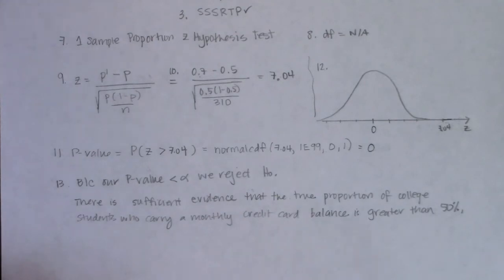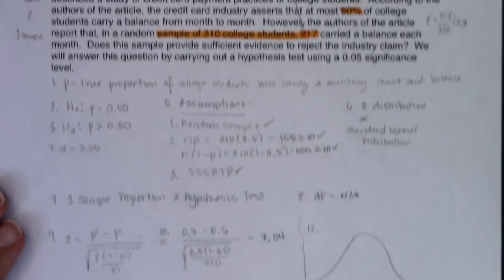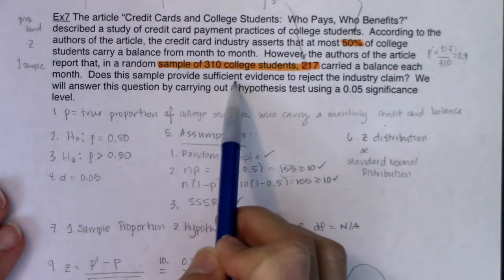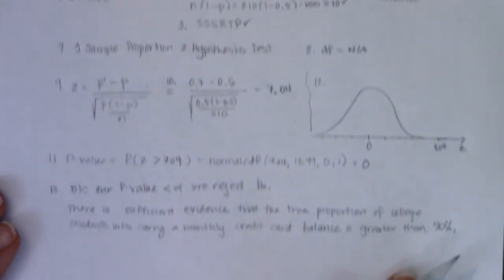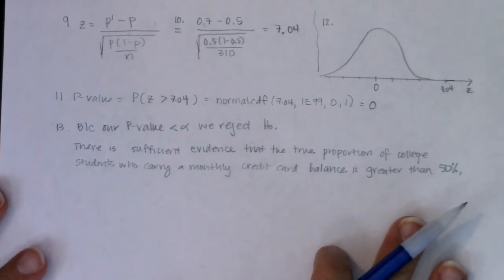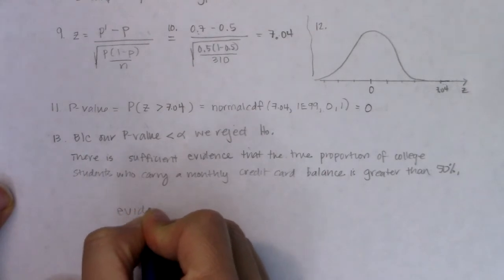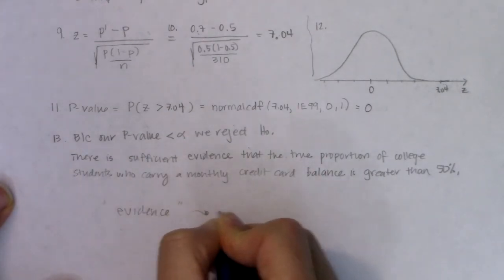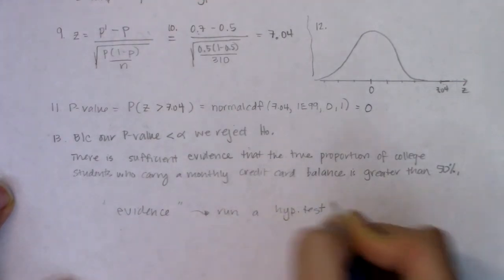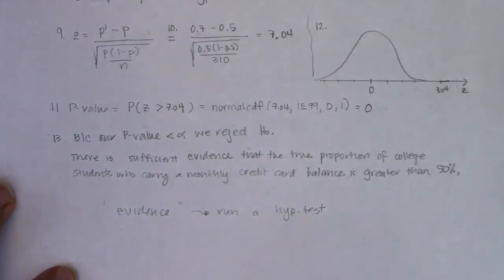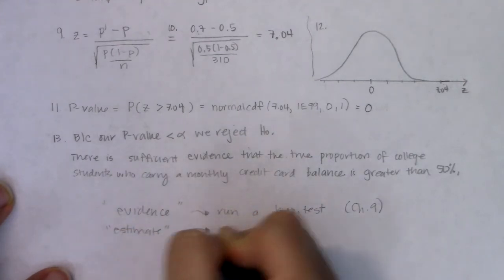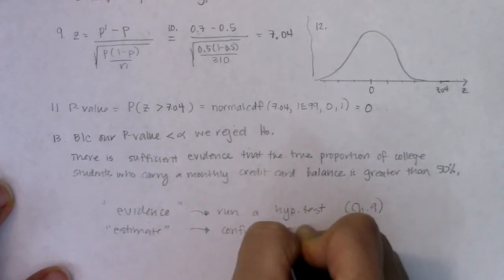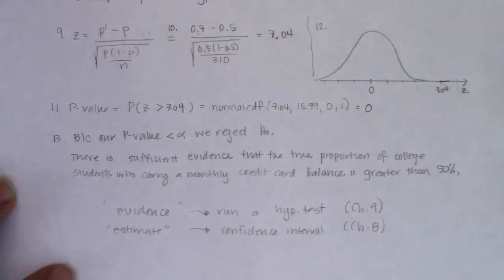Alternatively: 'This sample provides sufficient evidence to reject the industry claim.' When you see the word 'evidence' — especially 'sufficient evidence' — that's code for: run a hypothesis test. If the question asks you to 'estimate,' that was a confidence interval from chapter eight. But 'evidence' is synonymous with hypothesis testing.